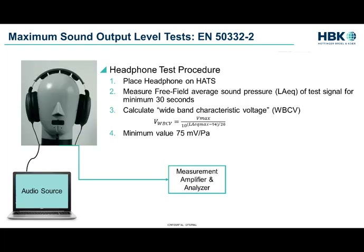To test the headphones, we need to measure both the electrical voltage of the signal being fed to them as well as the free field A-weighted SPL on the head and torso simulator. This test gives us the wideband characteristic voltage, or WBCV, which is the electrical voltage at which the headphones will generate a sound level of 94 decibels, or 1 pascal. Thus, the WBCV is actually a sensitivity rating in units of millivolts per pascal. The WBCV should be not less than 75 millivolts per pascal.